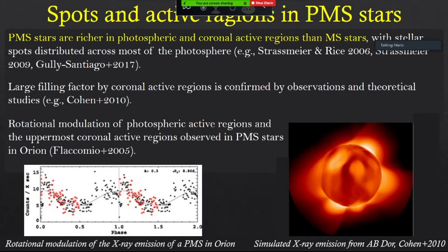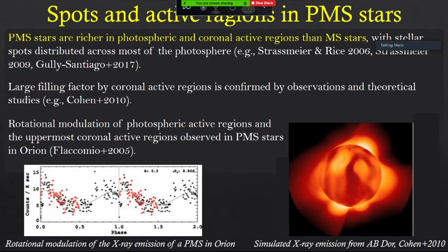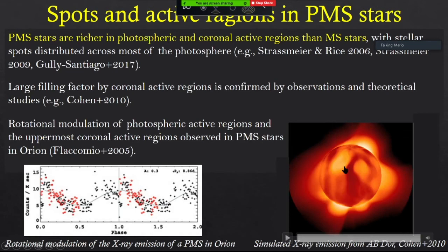Since pre-main sequence stars have a very intense magnetic field, it's not surprising that they also host many active regions both in their photosphere and in their corona. Several studies have demonstrated that the photosphere of pre-main sequence stars can host a rich population of dark spots, and the corona can be characterized by several active regions. This is a theoretical study by Cohen and collaborators who simulated the corona of AB Doradus — you can see several very bright active regions. The X-ray emission from coronal active regions can be modulated by stellar rotation, as found in Orion with the COUP project by Flaccomio and collaborators.